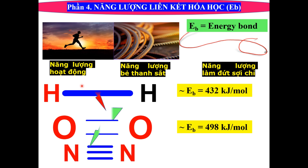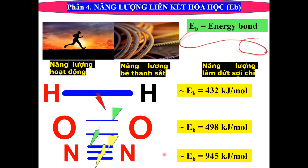Ví dụ như phân tử nitrogen thì chúng ta muốn phá vỡ cái liên kết 3 này ra, thì chúng ta cũng cần một cái dạng năng lượng để bứt cái liên kết 3 này ra, chuyển 2 phân tử này về 2 cái nguyên tử nitrogen. Như vậy cái năng lượng để phá vỡ liên kết 3 này thì em thấy nó lớn hơn rất nhiều, đó là 945 kJ trên mol. Năng lượng dành cho liên kết đơn nhỏ hơn liên kết đôi, và nhỏ hơn liên kết 3.